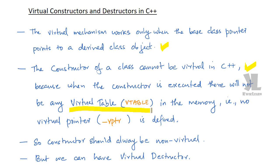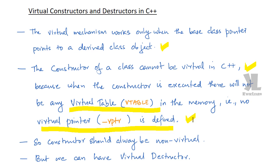When the virtual table is created, that is when the virtual pointer will be defined. At constructor execution time, the class virtual table is created in memory and the virtual pointer is defined.